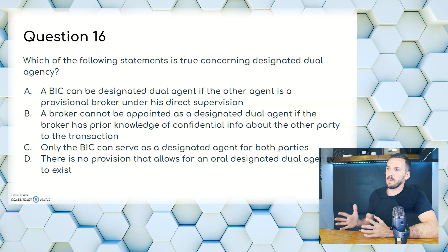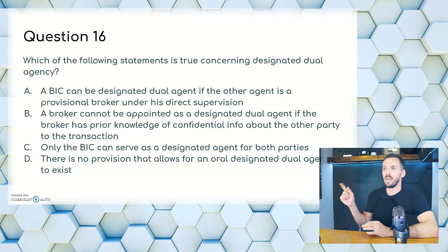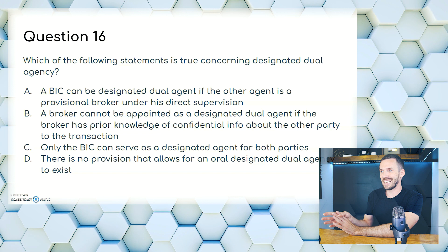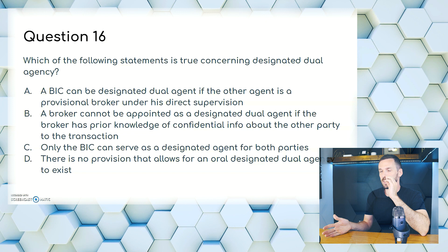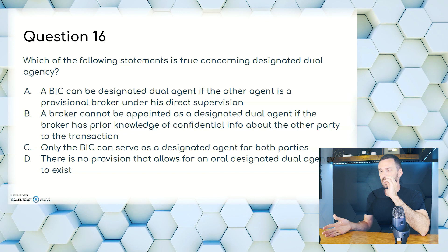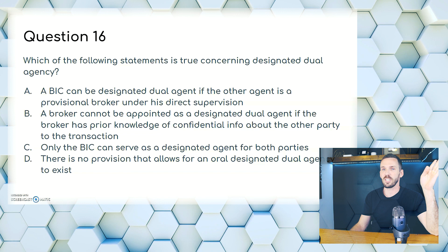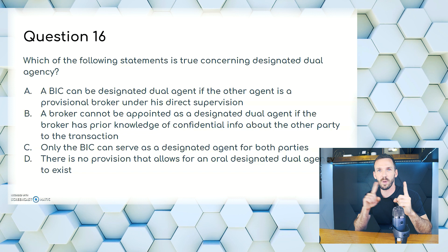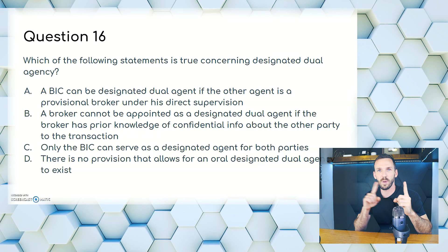Question 16 — note: the host states this question is completely wrong and to skip it. The correction is that a BIC cannot be a designated dual agent if the other agent is a provisional broker. If the agent is new and just out of school, they cannot be in designated dual agency with a broker in charge who supervises them.